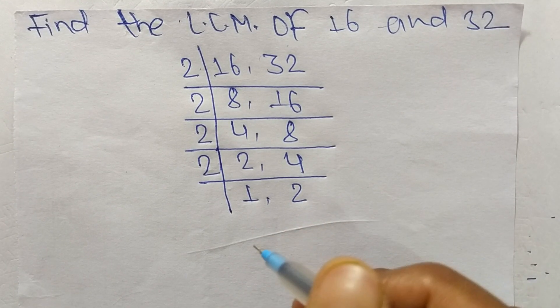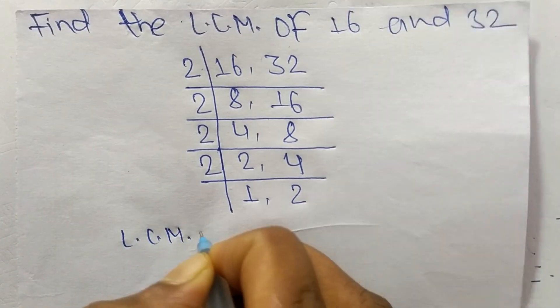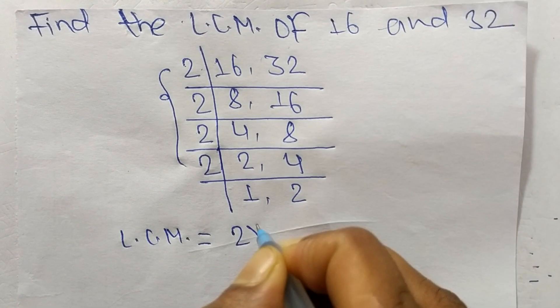So the LCM is equal to - from this part it is 2 times 2 times 2 times 2, and from this part we have 1 and 2, and we take here only 2.